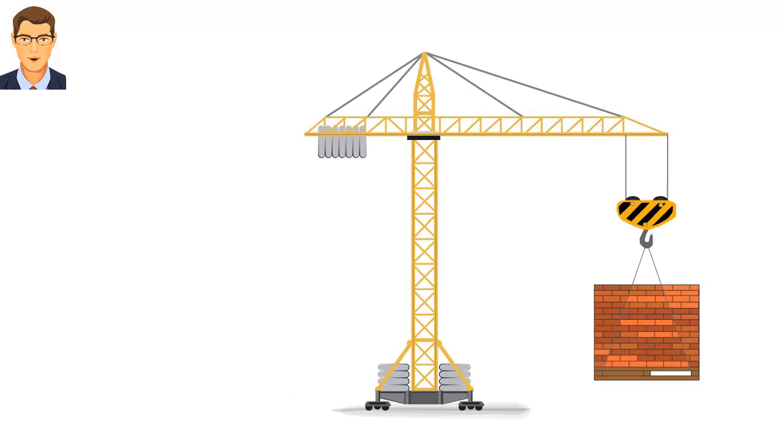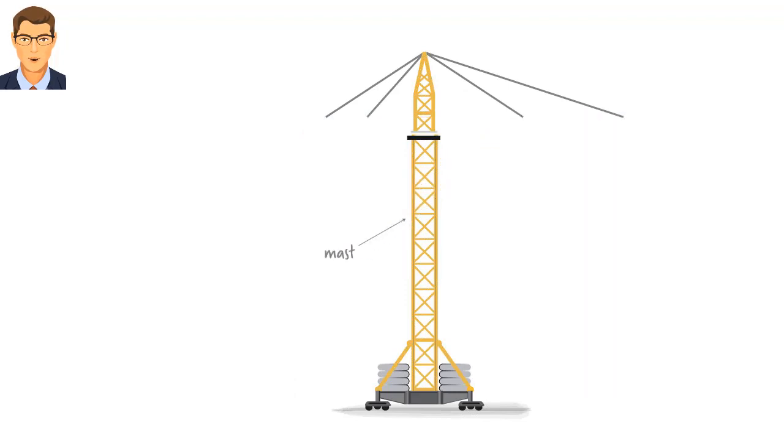Consider this construction crane. Each of the cables attached to the tip of the mast carries a force, like this. Collectively, these forces are pressing down on the mast. Therefore, the force that the mast must be able to carry is the sum of the cable forces. Finding this sum requires vector addition, an operation on vectors that we are going to examine in this lecture.